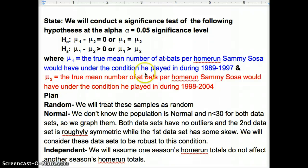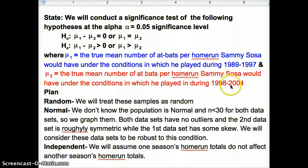Then we define mu1 and mu2. Mu1 is going to be the mean, true mean number of at-bats per home run Sammy Sosa would have under the conditions in which he played during 1989 to 1997. Mu2, which is the same thing, but for 1998 to 2004. We're treating the same samples as random. In sports, that's what we can do. That's all we can do. We have the whole data set there for those years, and we're seeing if there's a significant difference.